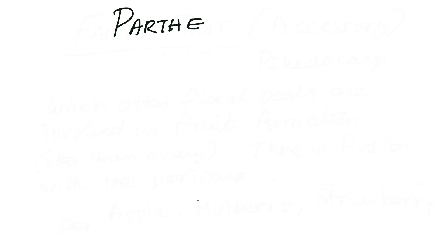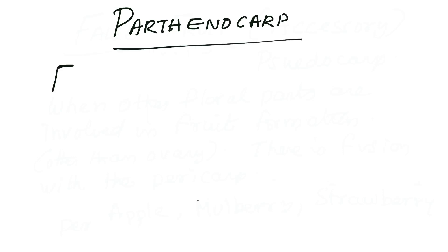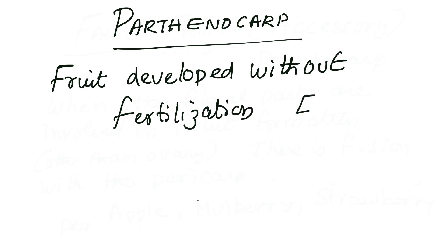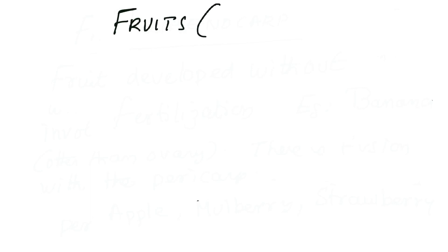There is a very interesting special type of fruit development called parthenocarpy, and the process is called parthenocarpy. It denotes the development of fruits without fertilization, which means seeds may not be present. When fruits develop without fertilization, we call such a fruit a parthenocarp. A very famous example is banana.